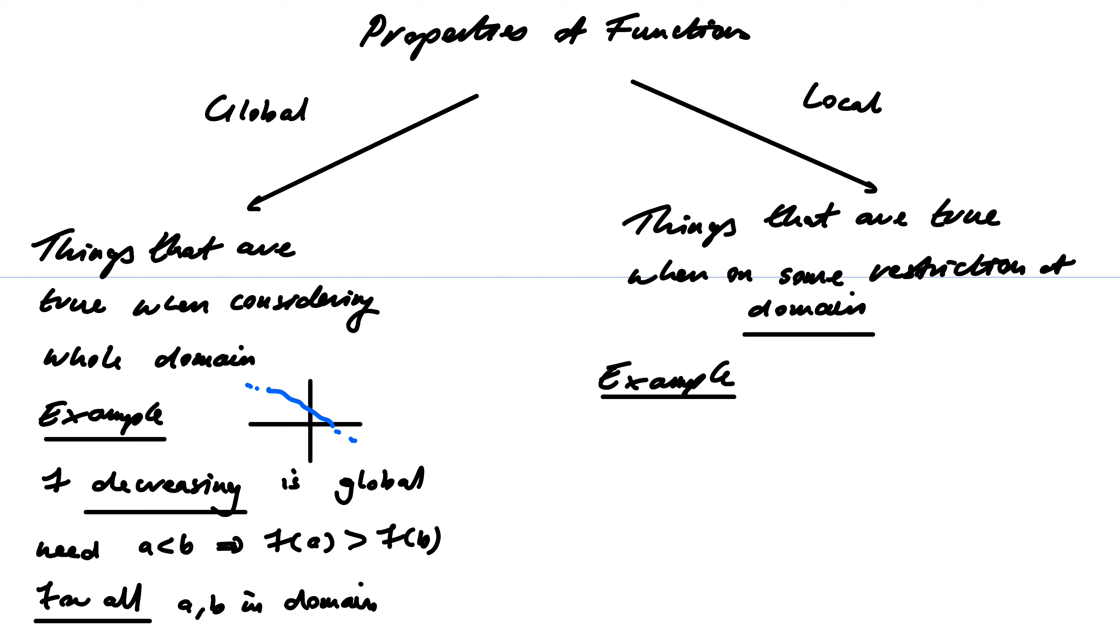So let's do an example of this. So we could have, instead of saying a function is decreasing, we could say it's decreasing on some interval, or it's decreasing on some restriction. So we could have f decreasing on some restriction of the domain.